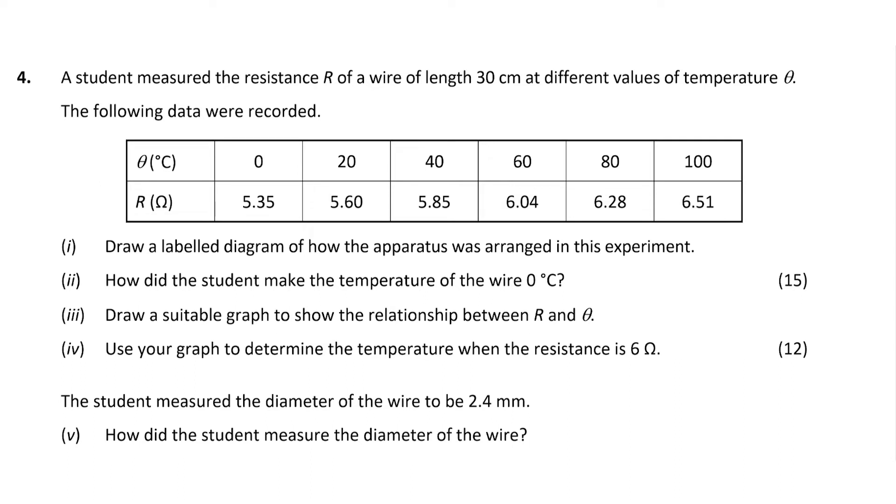Looking at question 4, this question can be roughly split into two different parts. The first section tells us that for a wire of length 30 centimeters, a student measured the resistance R at different values of temperature θ.